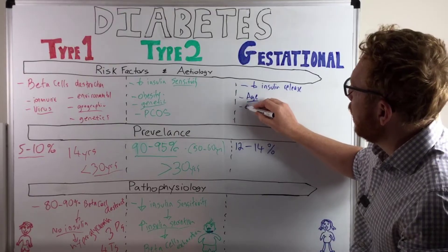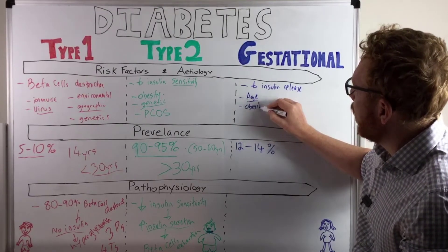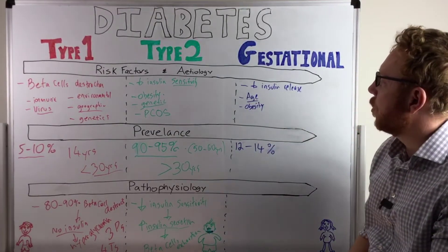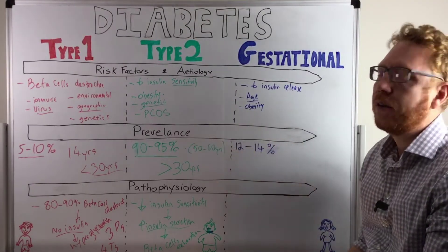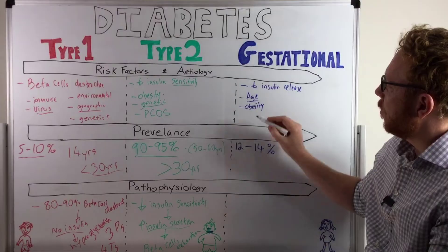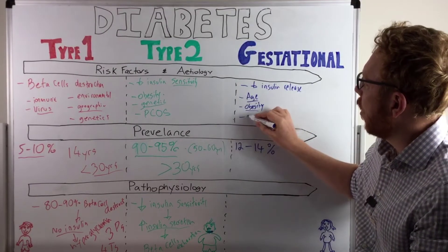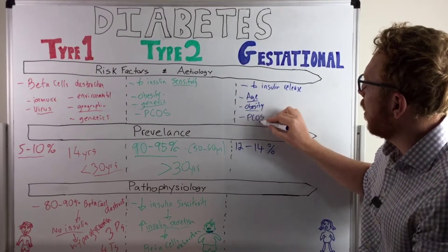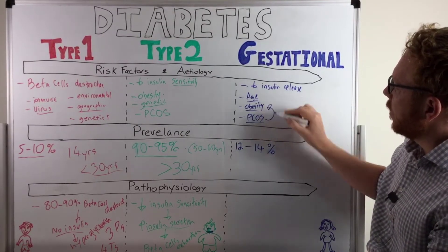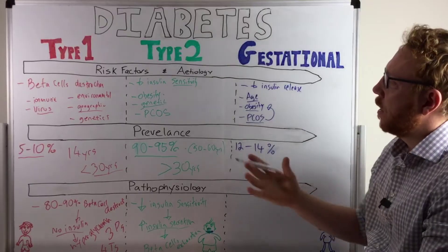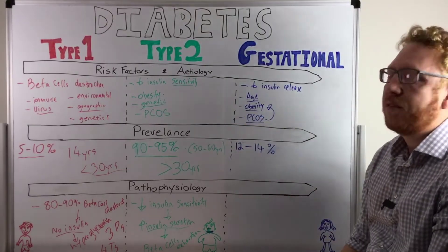So age is important. Obesity is also a higher risk. So obesity seems to increase the resistance or the sensitivity to insulin at the tissue level. So obesity is another one. And also polycystic ovaries is another one to be mindful of. What this will do is increase the likelihood of obesity, but also decrease the sensitivity of insulin.